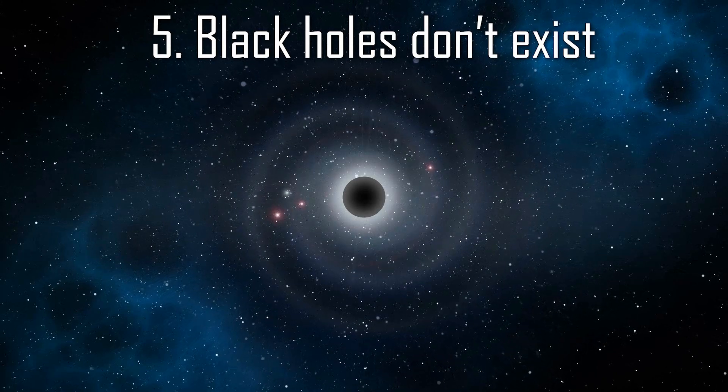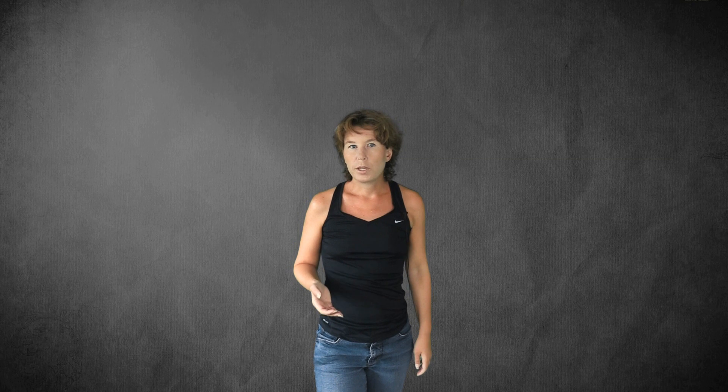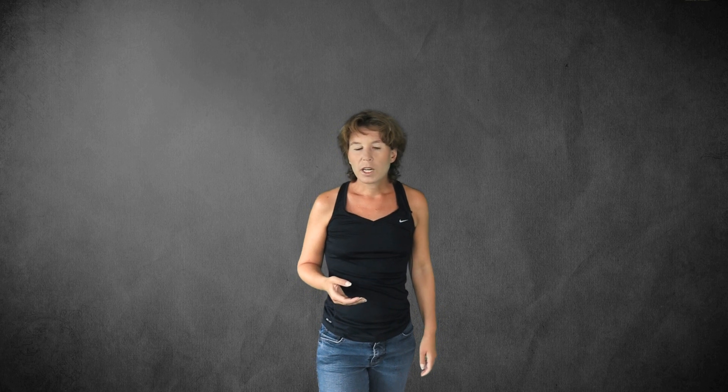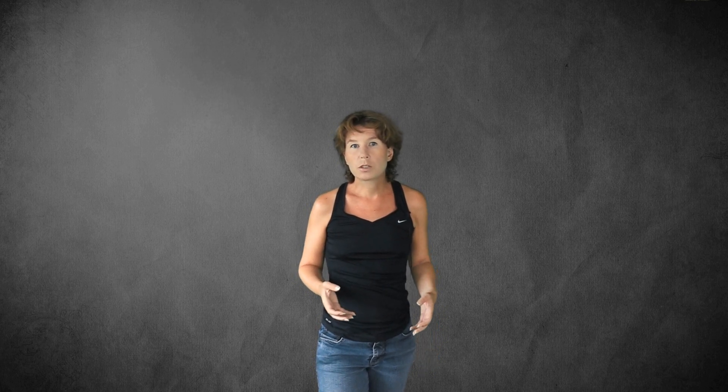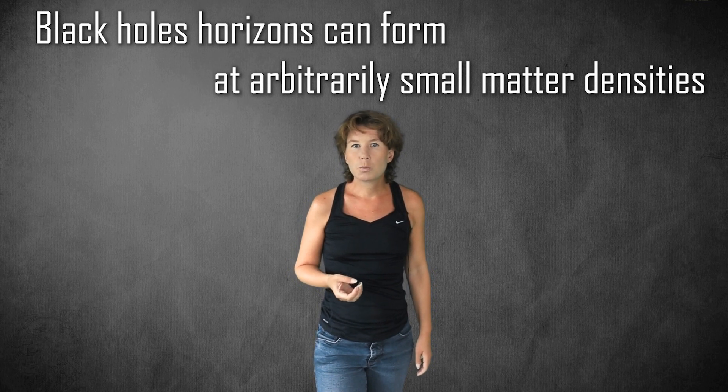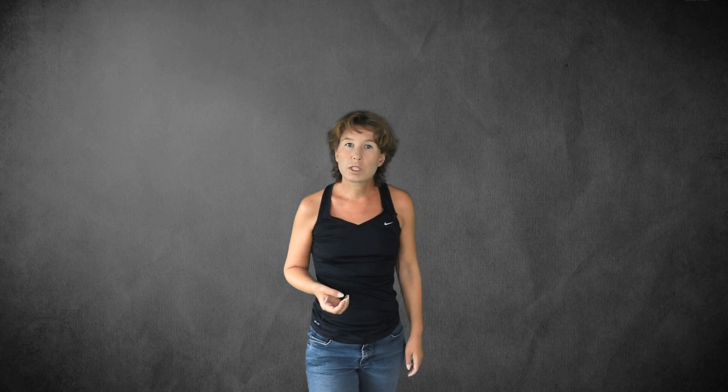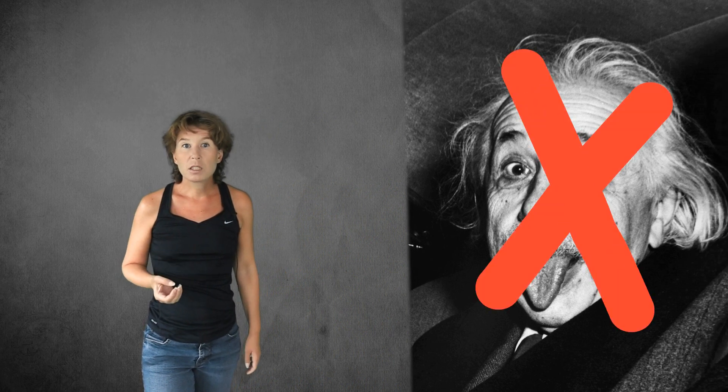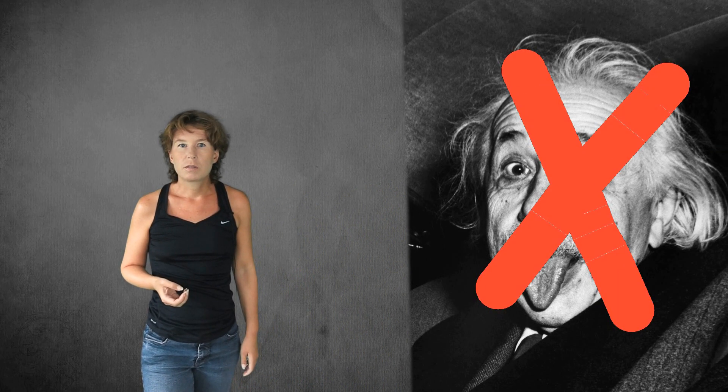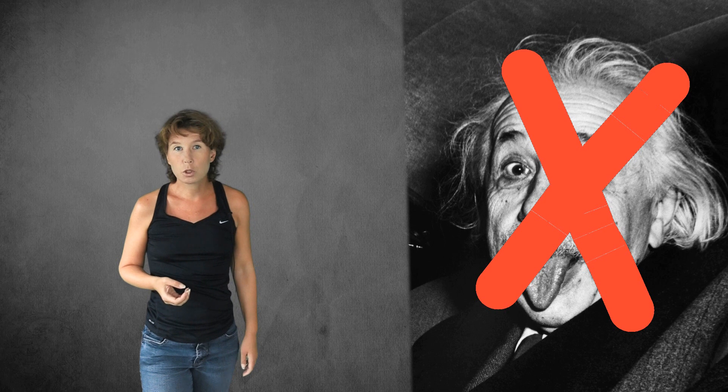Fifth, black holes don't exist. Finally, some physicists have tried to argue that black holes are never created in the first place, in which case no information can get lost in them. To make this work, one has to find a way to prevent a distribution of matter from collapsing to a size that is below its Schwarzschild radius. But since the formation of a black hole horizon can happen at arbitrarily small matter densities, this requires that one invent some new physics which violates the equivalence principle, and that is the key principle underlying Einstein's theory of general relativity. This option is a logical possibility, but for most physicists, it's asking for too much.